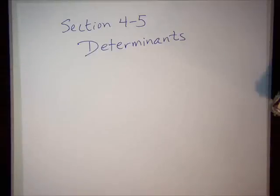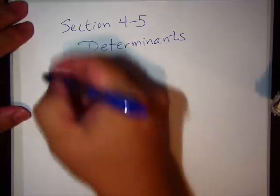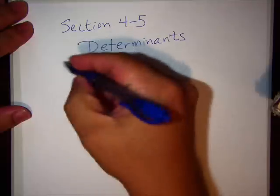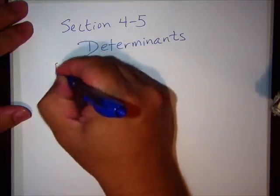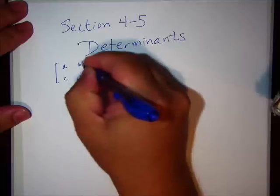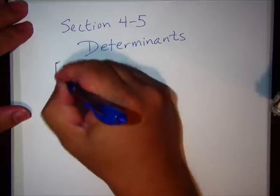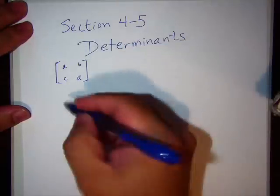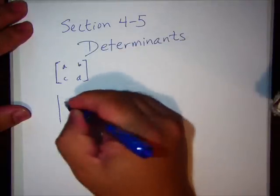Whenever we find determinants, up to this point, the symbols I've used look like this with the little square brackets. When we find determinants, it looks like absolute value signs.